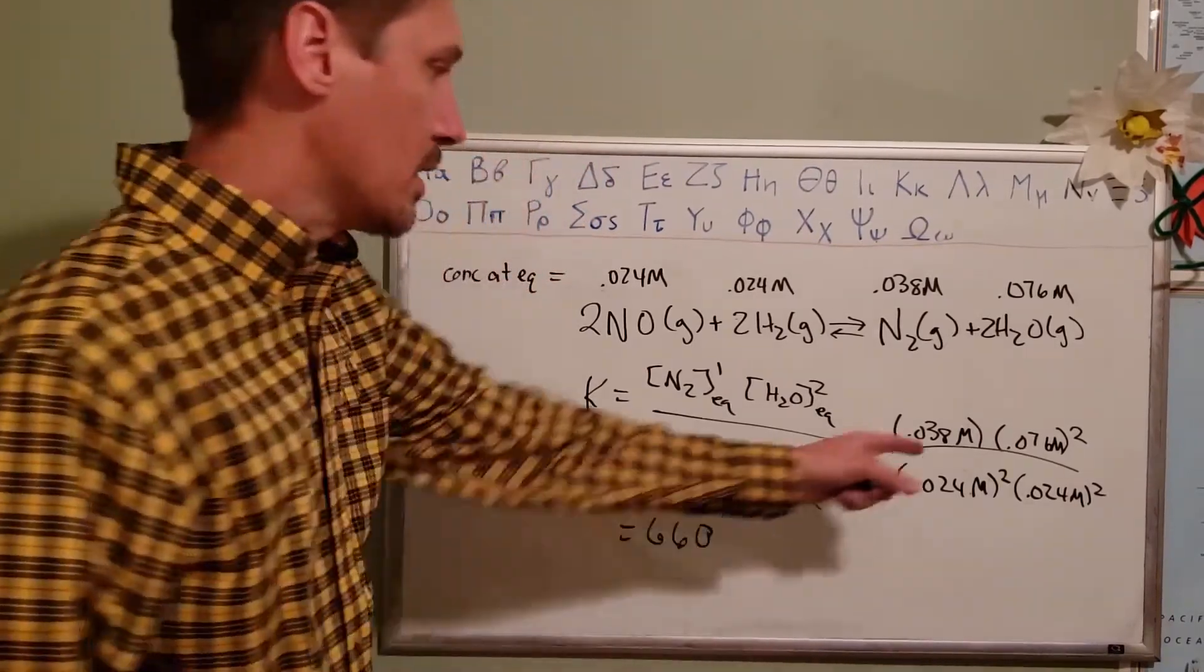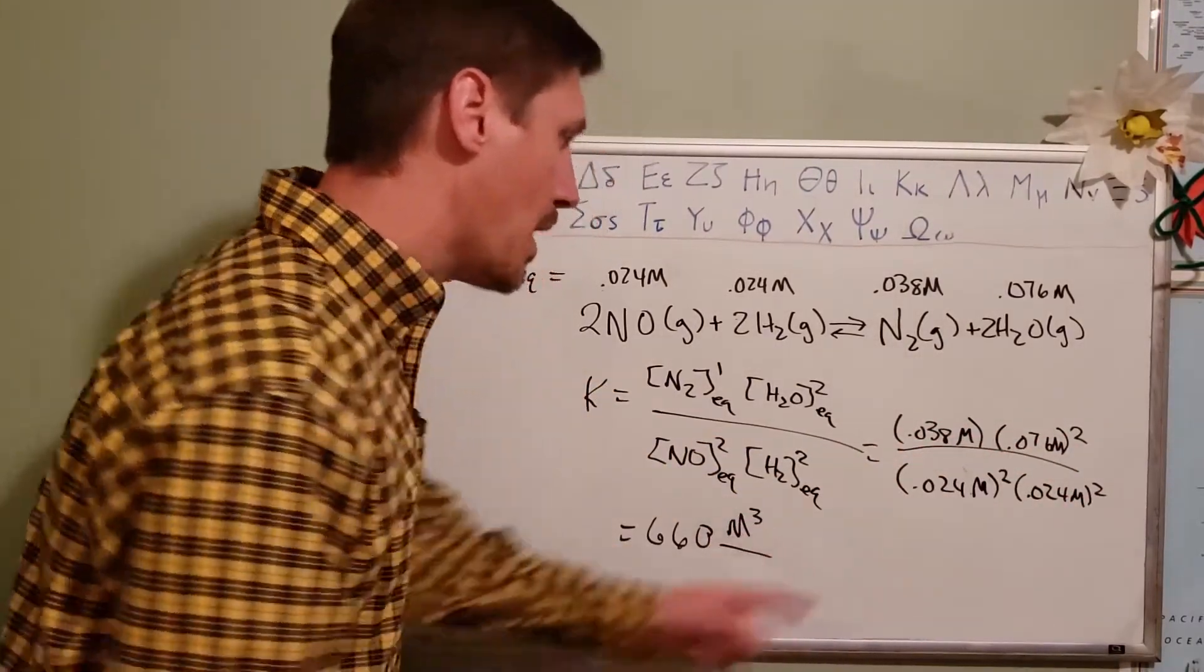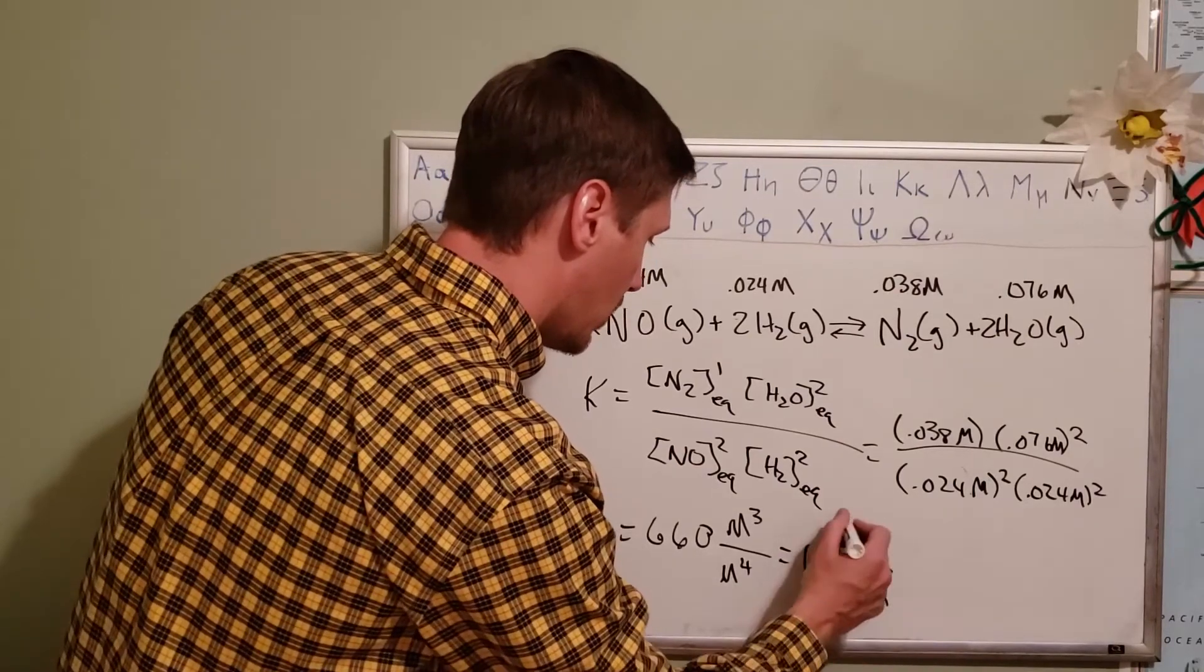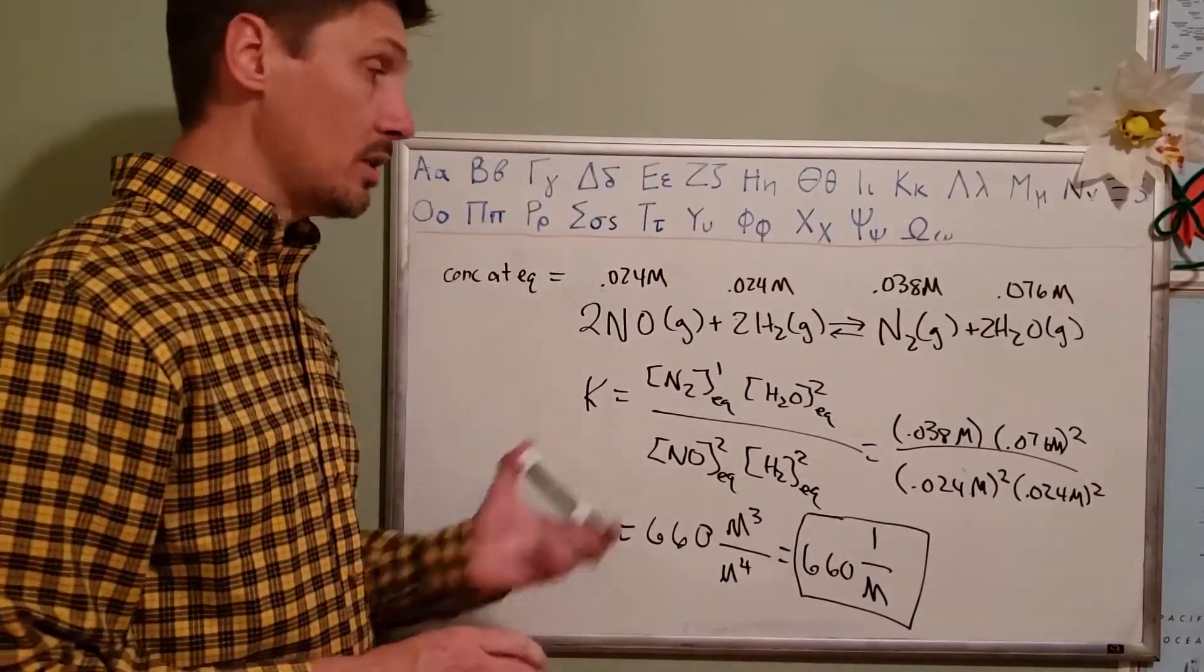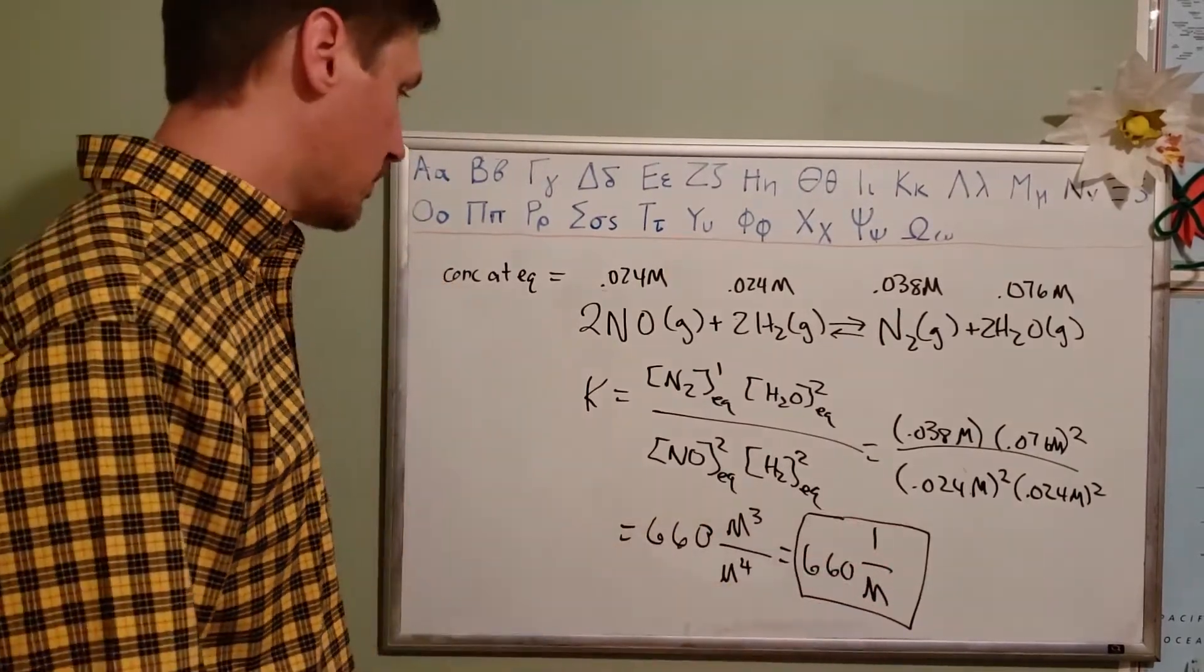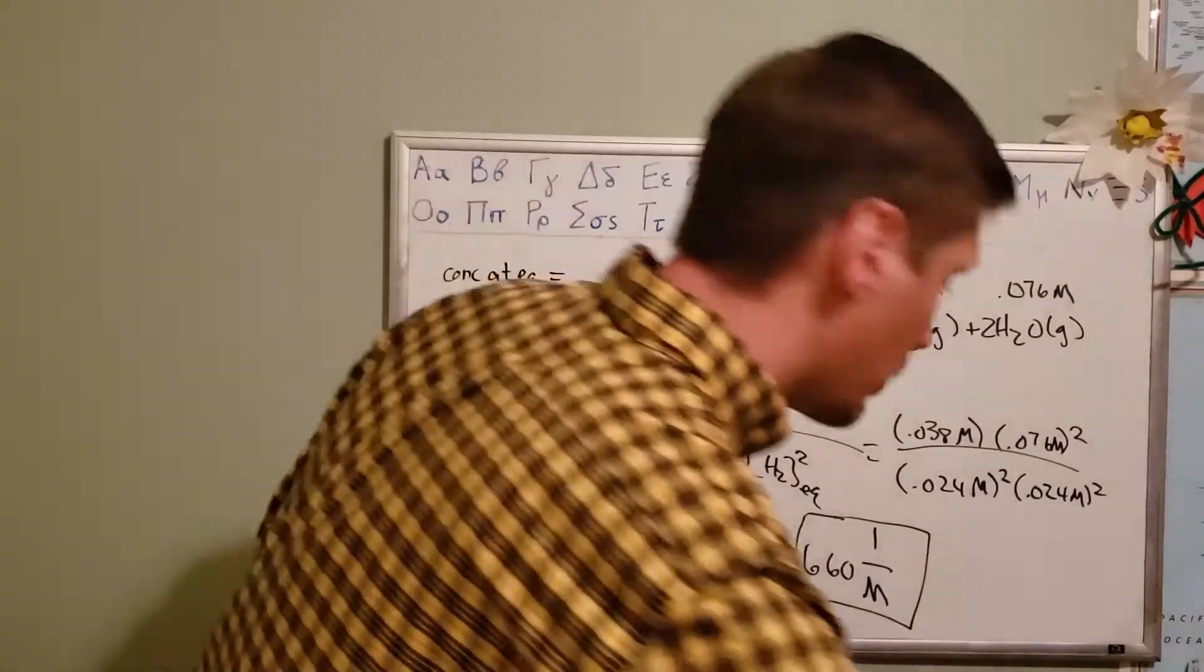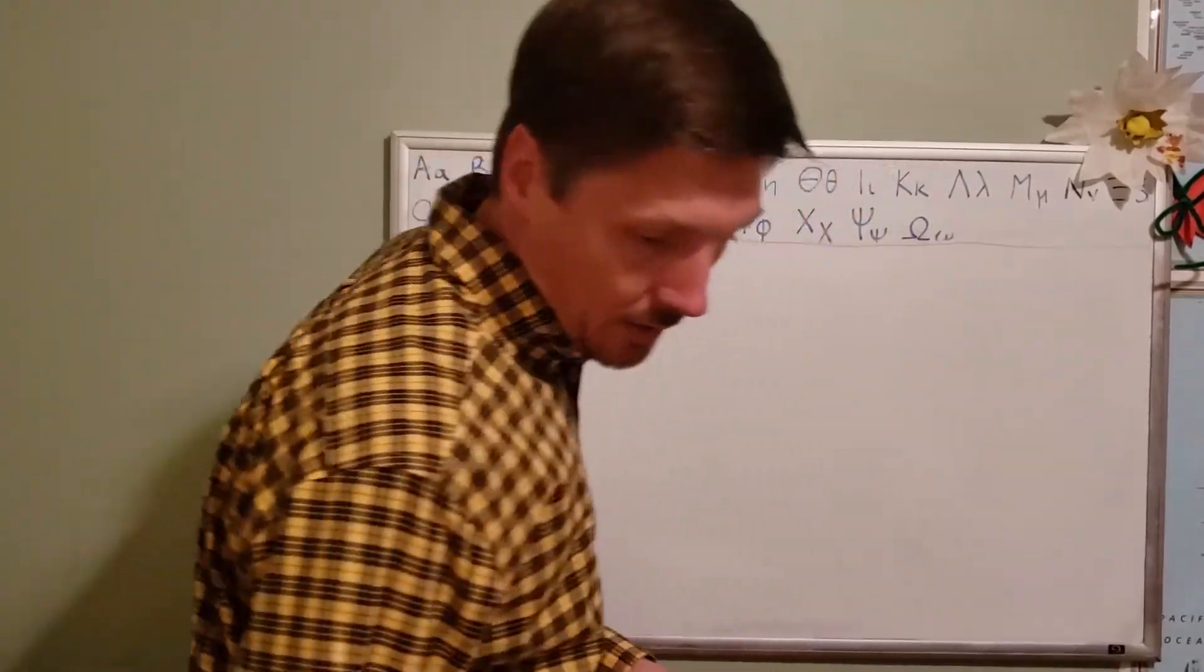The reason I wanted to write the units down is to make sure we get our units right. On top here we've got molarity cubed, and on the bottom we've got molarity to the fourth. So our final unit is going to be 660 with a unit of one over molarity. Just notice, just like when we were using the rate equation, the unit here is not going to always be the same for every equation. You have to make sure that you cancel out your molarity units appropriately.